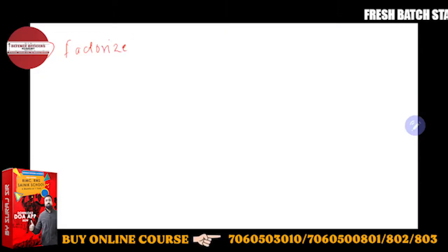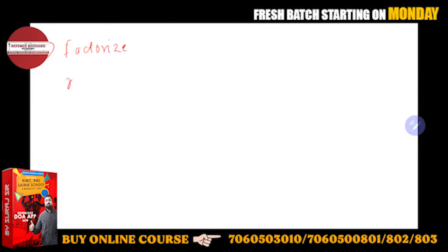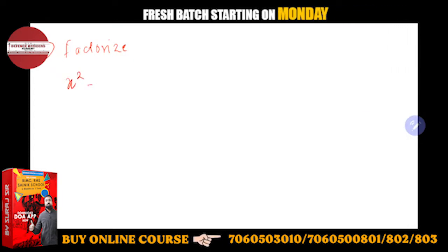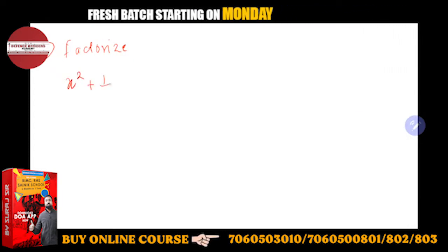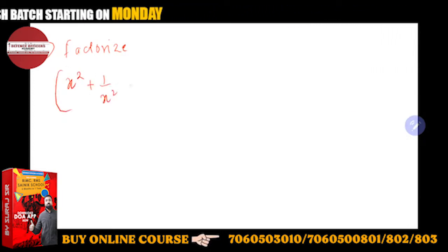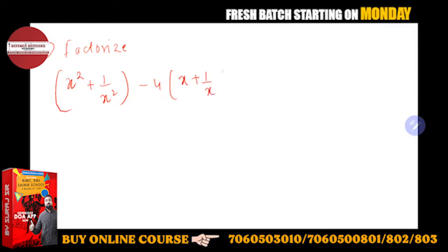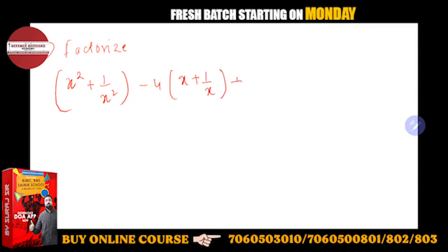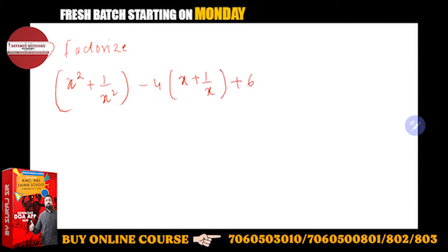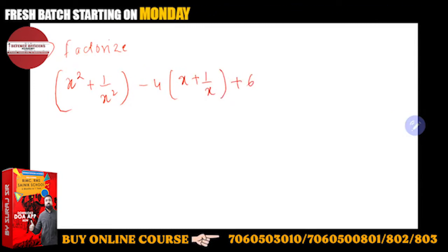Aapko factorize karna hai. Diya kaisa hai, woh important hai. Aapko diya hai x square plus 1 upon x square, minus 4 into x plus 1 upon x, plus 6. This you have to factorize — this is the question. So this is doubt number 1.